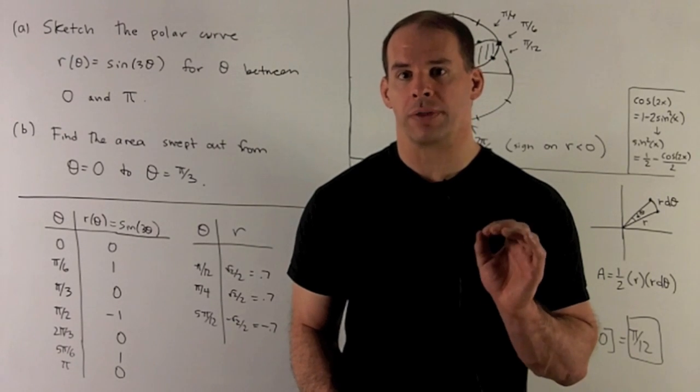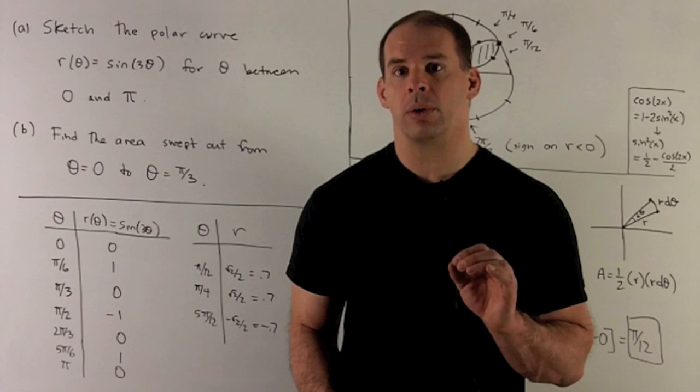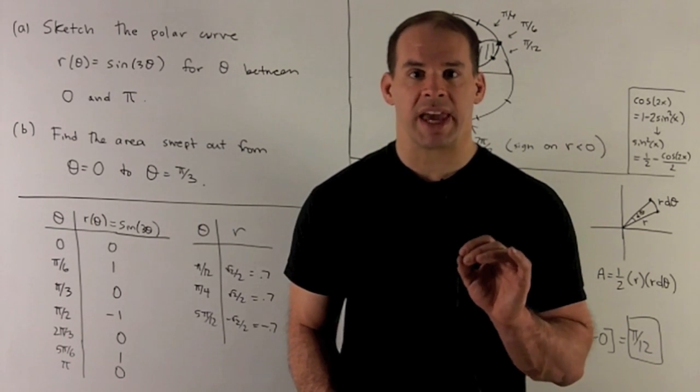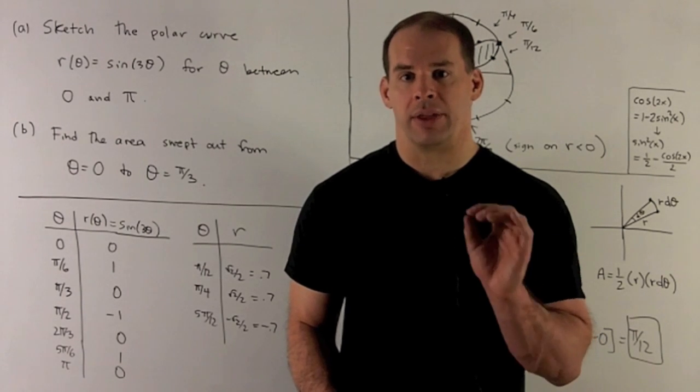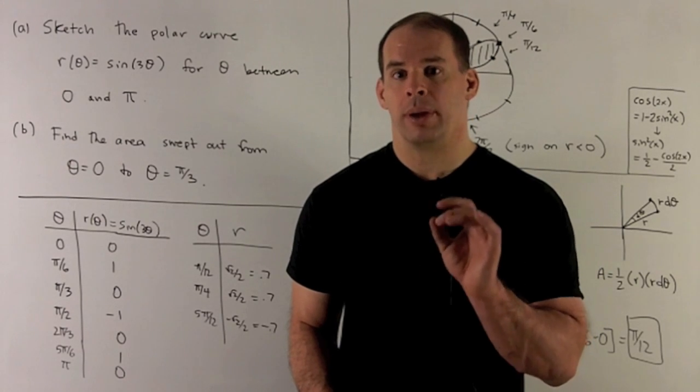To sketch the polar curve r(θ) = sin(3θ) for θ between 0 and π. Once you have the sketch, find the area between the origin and the curve from θ = 0 to θ = 2π/3.